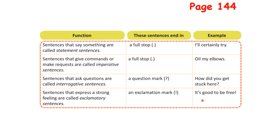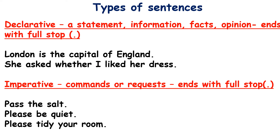Now let's see each type in detail. This is on your screen, not in your textbook. Declarative sentences are statements — they convey a piece of information, facts, or your opinion and ideas, and they end with a full stop. Examples: 'London is the capital of England' — just a fact. 'She asked whether I liked her dress' — it ends with a full stop and is just a statement.